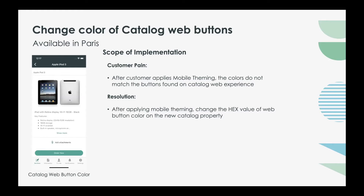There's one additional property to control: changing the color of your catalog buttons. The catalog experience on Now Mobile is web-based. When customers apply in-app color theming to match their company's brand colors, they use the mobile theming module. However, mobile theming only applies colors to native screens and buttons — web screen buttons get missed. The Now Mobile team introduced a new property in Paris to easily customize the Order Now button color, and we'll show you how to do that as well.